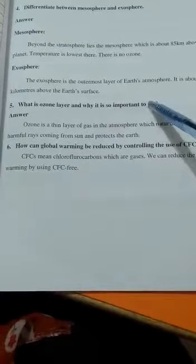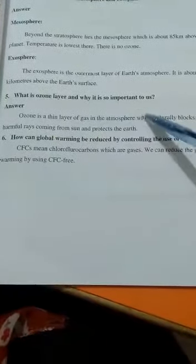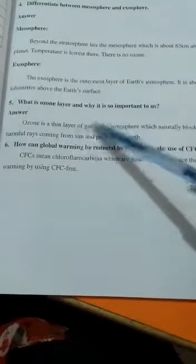Next, what is ozone layer and why is it important to us? Ozone is a thin layer of gas in the atmosphere which naturally blocks the harmful rays coming from the sun and protects the Earth.